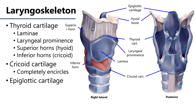The thyroid cartilage consists of two laterally placed laminae, or sheets — one lamina here and the other meets it along the midline. There is a laryngeal prominence located there, which is a palpable landmark. If you take a finger or two and palpate the midline of your neck, you can palpate that laryngeal prominence.